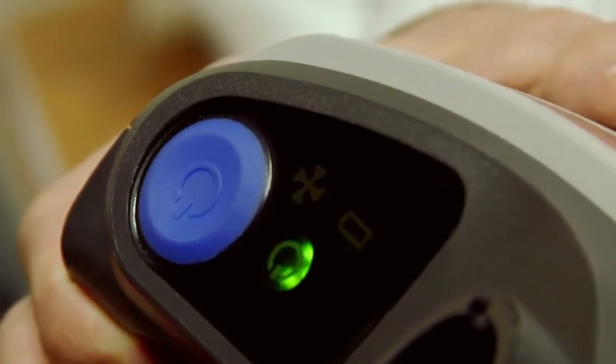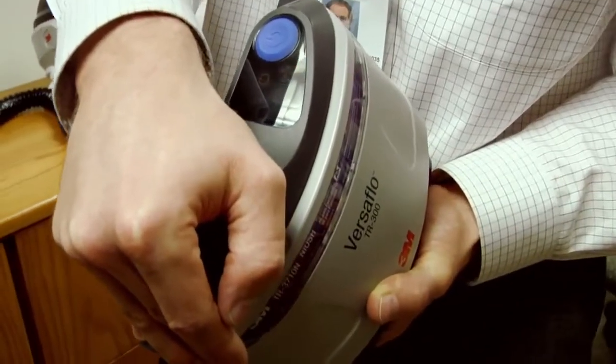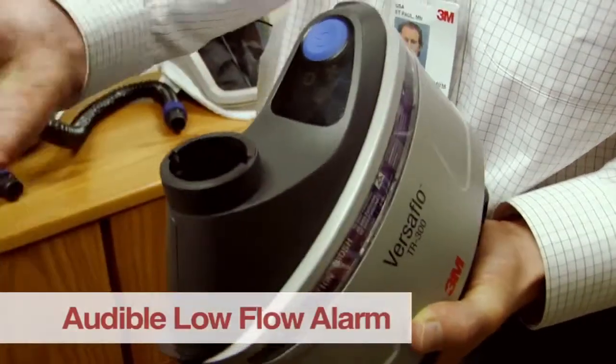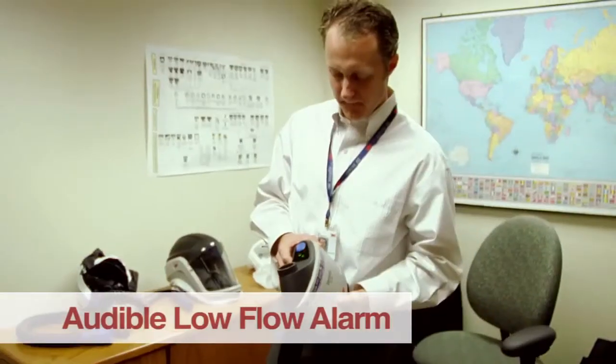This PAPR has automatic flow control. If for some reason something blocks the stream, the product is smart enough to know that there's some sort of constriction in the line and you're going to see an alarm. And of course, once you correct it, it'll reset itself.